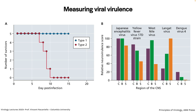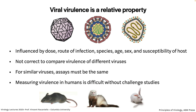Virulence is a relative, not absolute, property. It is influenced by many parameters: the dose of virus, route of infection, the species used, age, sex, and susceptibility of the host. You can't compare virulence of different viruses because they're different viruses and behave differently in different animals. If you want to compare, say, two different polioviruses, you have to use the same assay, the same amount of virus, the same route of inoculation in the same animal host. You can typically compare viruses within the same family.